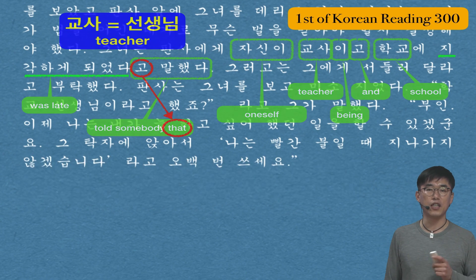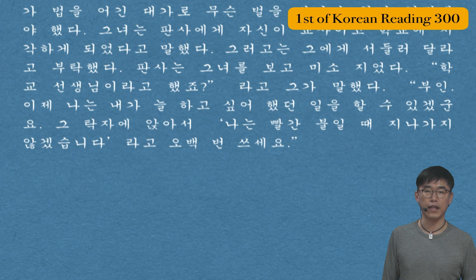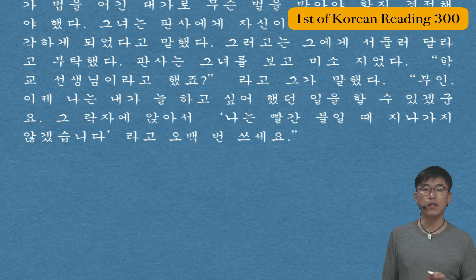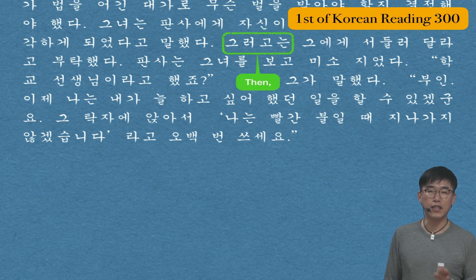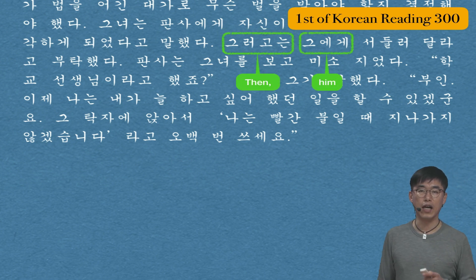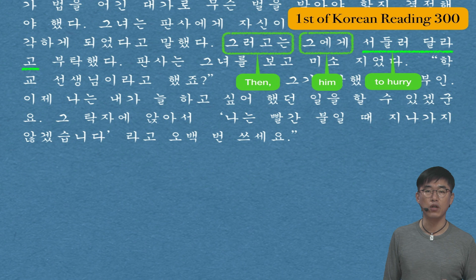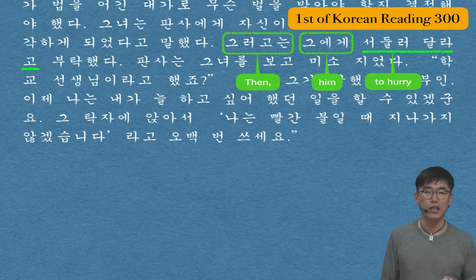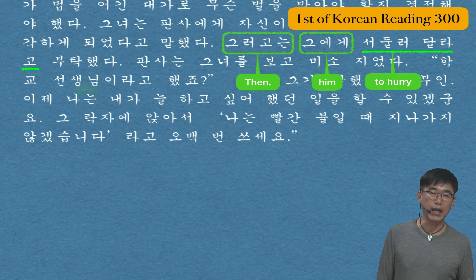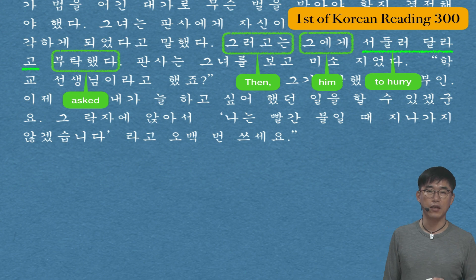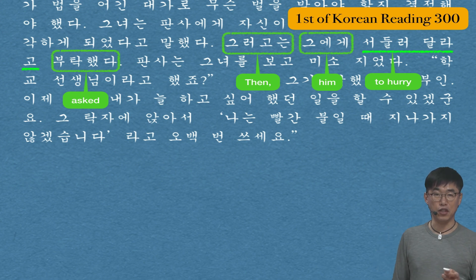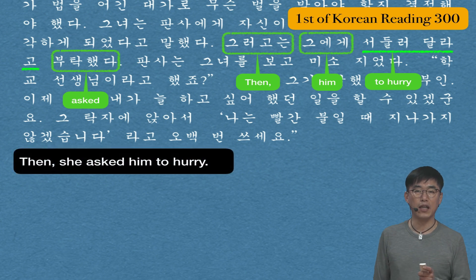The sixth sentence is 그러고는 그에게 서둘러 달라고 부탁했다 — Then she asked him to hurry. 그러고는 means then, and 그에게 means him. 서둘러 달라고 comes from 서두르다 (to hurry); it changes into this form because it is the objective complement of a requiring verb — such as ask, require, or tell someone to do something. 부탁했다 is the past tense of 부탁하다, meaning to ask, which is one of those requiring verbs.